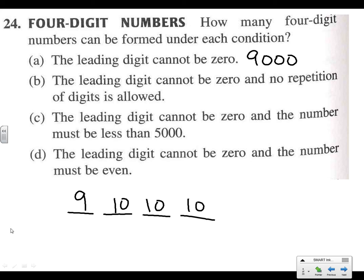For part (b), the leading digit cannot be zero and no repetition is allowed. The first spot has 9 options. Then we have 0 plus 9 more options — but one has already been picked — so there are 9 options for the second spot, then 8, then 7. So that's 9 × 9 × 8 × 7 = 4,536.